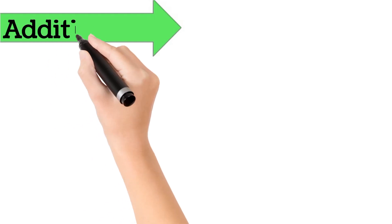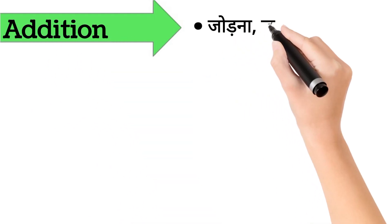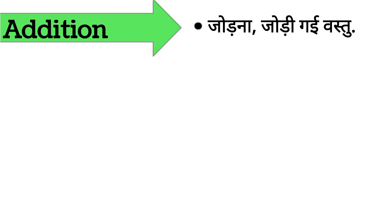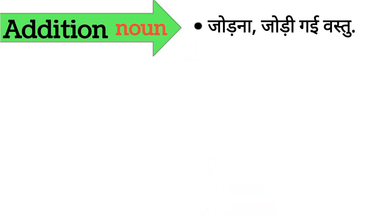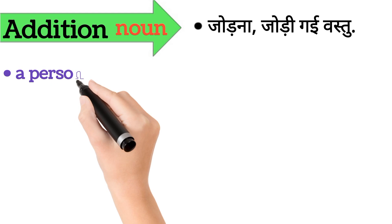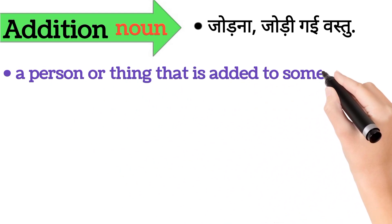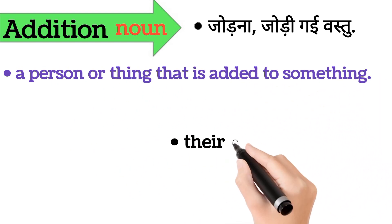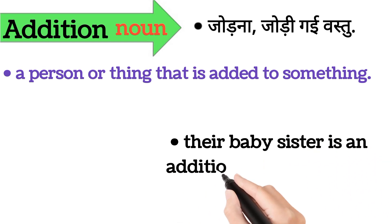Addition. Addition ka aarth hai jodna, jodi gai vastu. Addition noun form mein aata hai. It's also called a person or thing that is added to something. Iska example hai: their baby sister is an addition to their family.